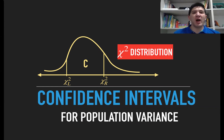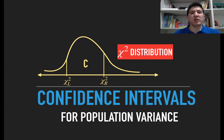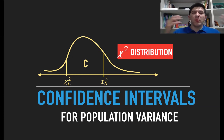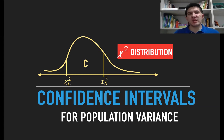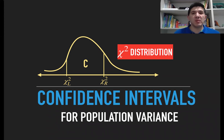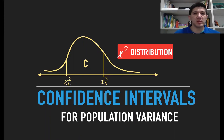Previously, we've learned how to estimate the population mean or the proportion, and we've learned that in order to construct the confidence intervals around the point estimates, we need to use either the z table or the t table. In order to estimate the population variance, we need to use the so-called chi-square distribution.